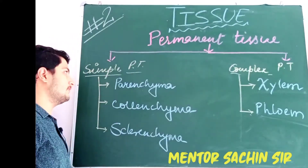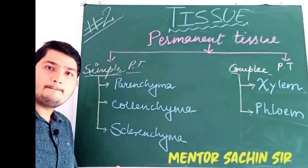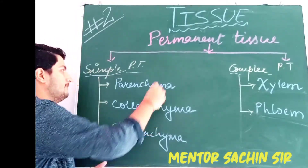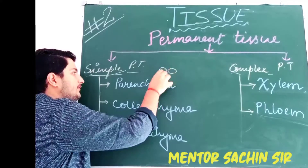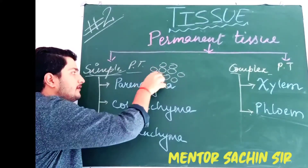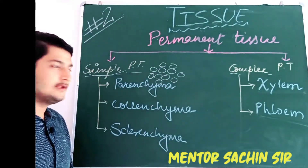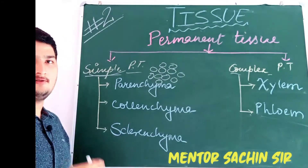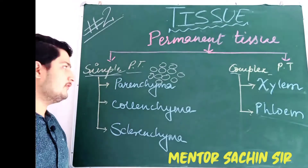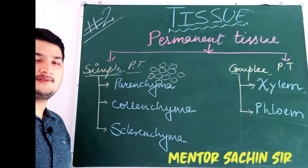What is the basic difference between these two? Simple permanent tissue is a type of tissue which consists of similar types of cells. Suppose this is a group of cells and this group consists of the same kinds of cells — one type of cell. Such permanent tissue is said to be simple permanent tissue. We can define it as the group of similar type of cells.